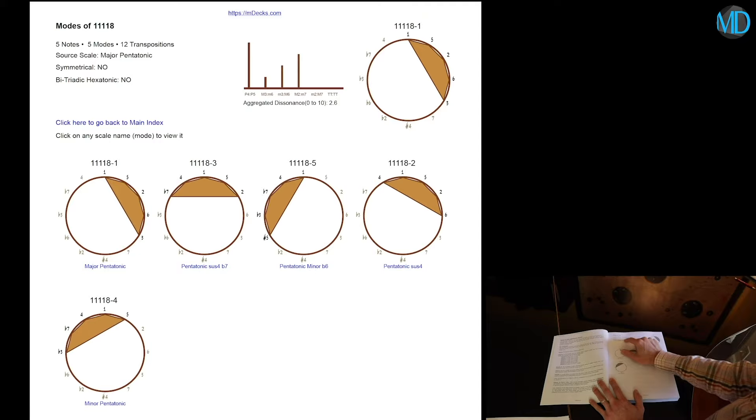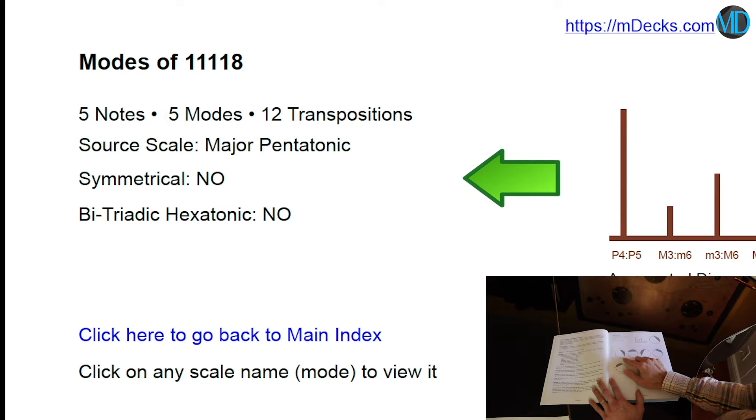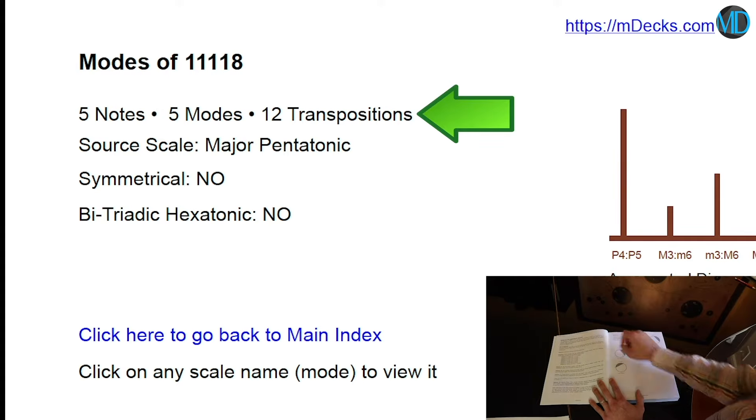In the top left, there's a card that tells us all the properties of not only the source scale that we started with, but all of the modes of that source scale. So, in other words, all 5 of these scales have 5 notes, 5 modes, and 12 transpositions.